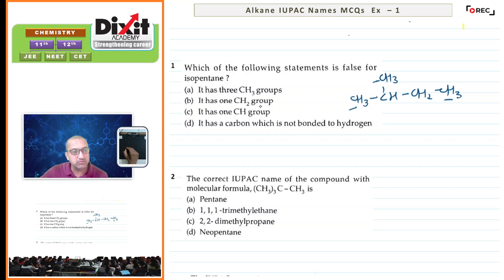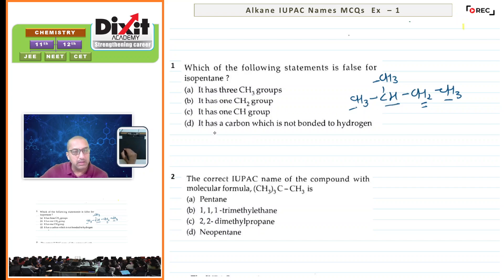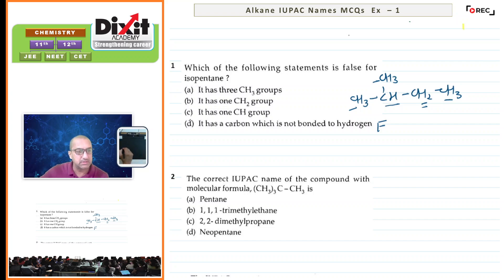It has one CH2 group — true. It has one CH group — this statement is also true. It has a carbon which is not bonded to hydrogen — this is false, because if you see the structure, all the carbon atoms are attached with hydrogen atoms. The correct option is D.